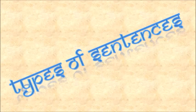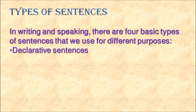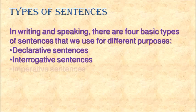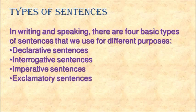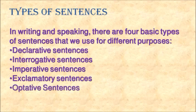So let's begin our discussion of types of sentences. Why should we learn them? In writing and speaking, there are four basic types of sentences that we use for different purposes. These types are declarative sentences, interrogative sentences, imperative sentences, and exclamatory sentences. I have added another type of sentence that I have found very useful in many other English grammar chapters, and this type is called optative sentences.